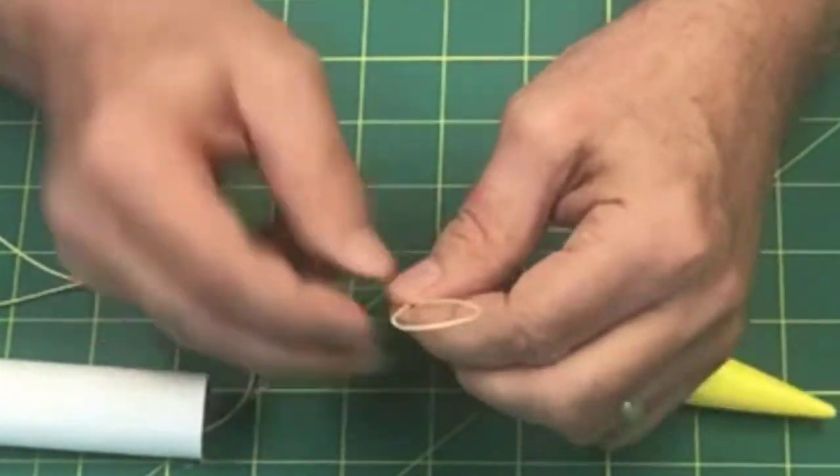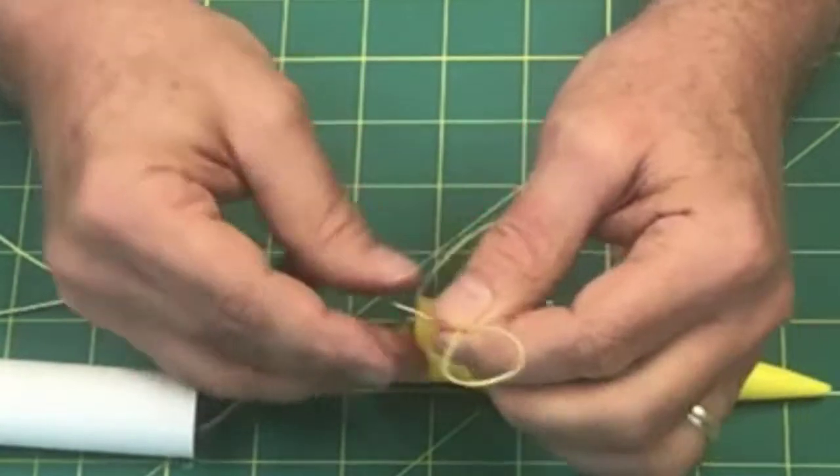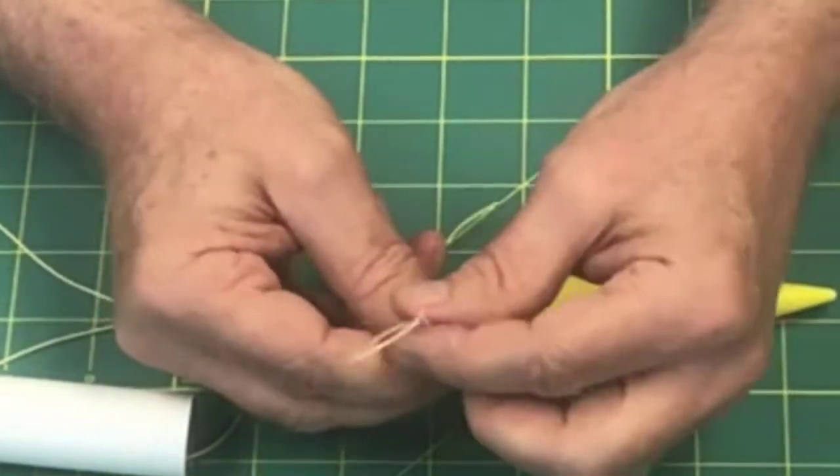Just take, oh I don't know, a couple inches from the back, and make the strings parallel here of your shock cord.